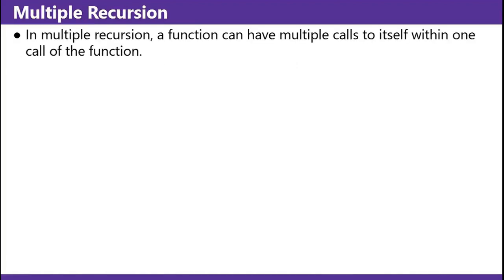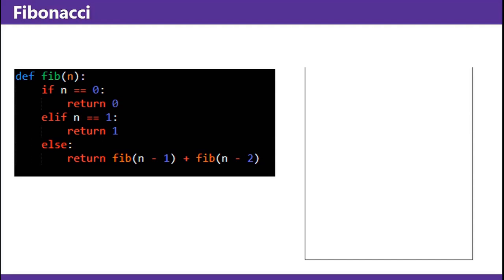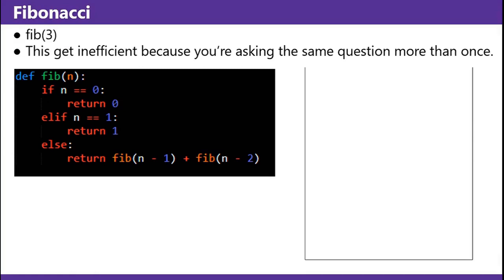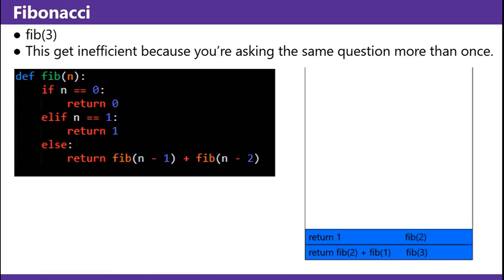Multiple recursion: a function can have multiple calls to itself within one call of the function — it ends up following the first call first, then when a base case is reached, the second call is later followed as stack frames are being popped off. Fibonacci: if n equals 0, return 0; if n equals 1, return 1; else return Fibonacci(n-1) plus Fibonacci(n-2). Demonstrating Fibonacci of 3 — this gets inefficient because you're asking the same question more than once. Fibonacci of 3: return Fibonacci of 2 plus Fibonacci of 1. Fibonacci of 2: Fibonacci of 1 plus Fibonacci of 0. Fibonacci of 1 is 1, Fibonacci of 0 is 0, so Fibonacci of 2 is 1. Then Fibonacci of 1 is 1 again — Fibonacci of 3 is 2.